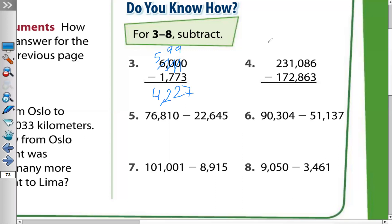Let's do question number 4. Starting from the ones. 6 minus 3 equals 3. 8 minus 6 equals 2. 0 minus 8, I can't do it. I'll take one from the next. The next is 1, becomes 0. This 0 becomes 10. 10 minus 8 equals 2. Then comma.